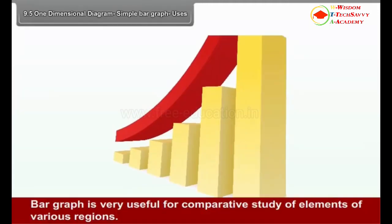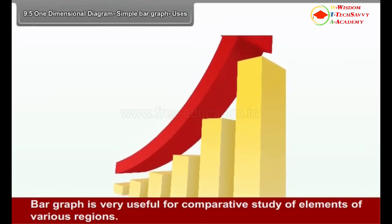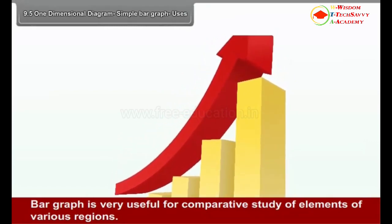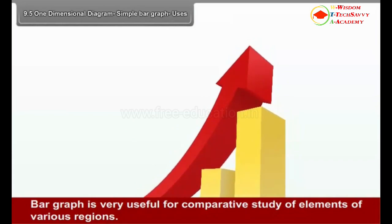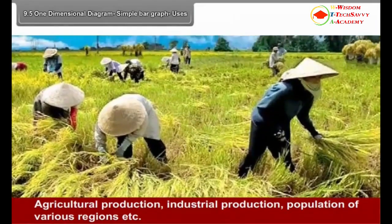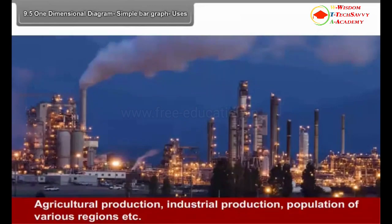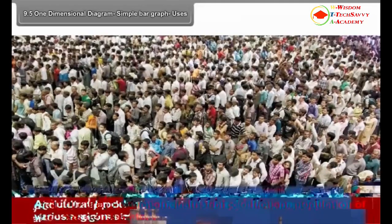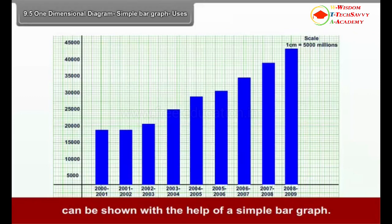Uses of Bar Graph: A bar graph is very useful for the comparative study of elements of various regions. Agricultural production, industrial production, population of various regions, etc. can be shown with the help of a simple bar graph.